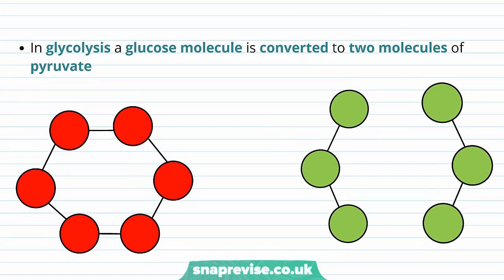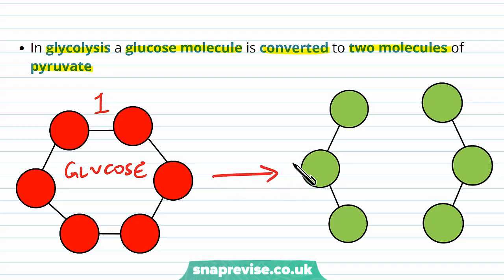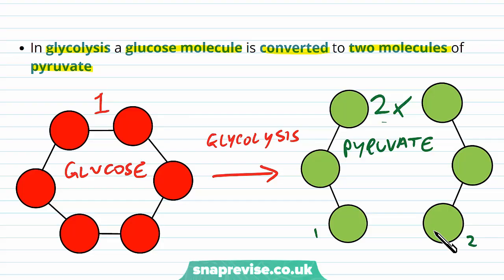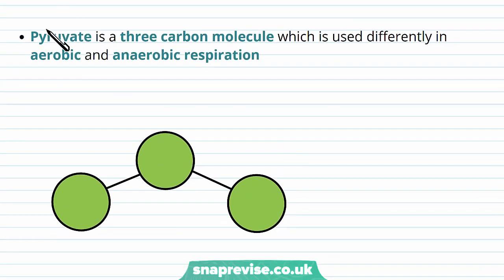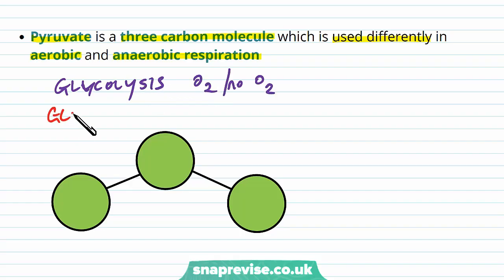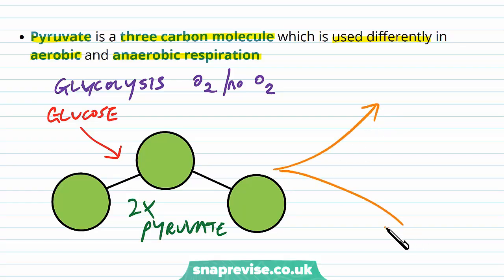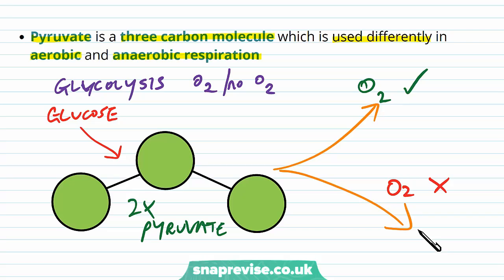Glycolysis is basically a set of reactions which is the first stage of respiration. In glycolysis, a glucose molecule is taken into the cell and it's converted to two molecules of pyruvate. Glucose is our main substrate for respiration, and every one glucose gives two pyruvate molecules. The pyruvate molecule is a three-carbon molecule which is used differently depending on whether it goes into aerobic or anaerobic respiration. If oxygen is present it goes down one particular pathway; if oxygen is absent it goes down a different pathway, but up to this point everything is the same.